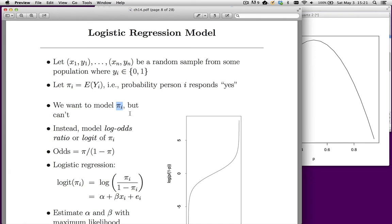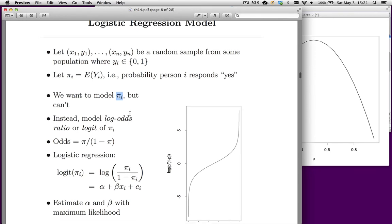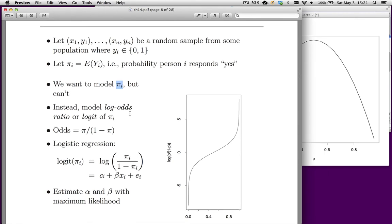So what we want to do is find a transformation that prevents us from going out of bounds. Now, there's quite a few functions that would do this. Perhaps the most commonly used is called the logit function or the log odds ratio. So what we're going to do is transform y as follows and model that then as a linear function of our predictors.